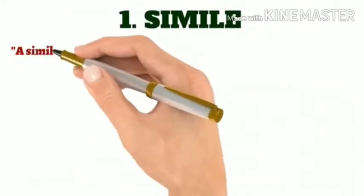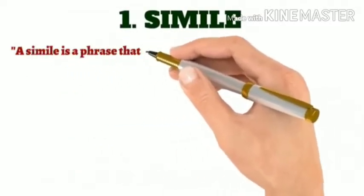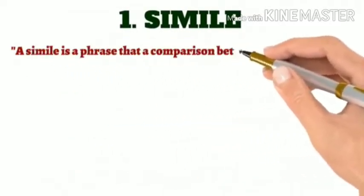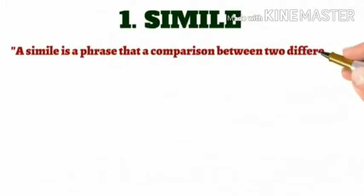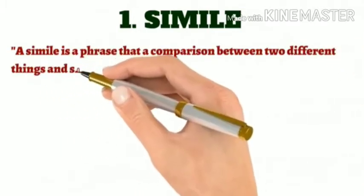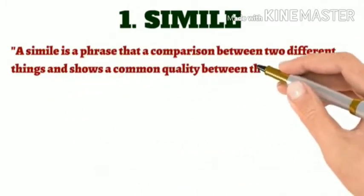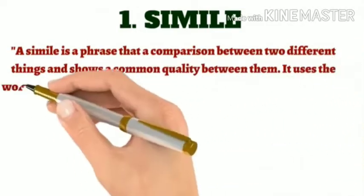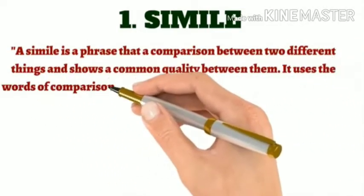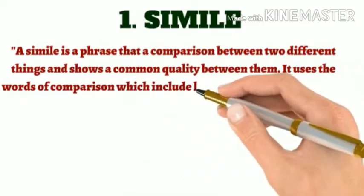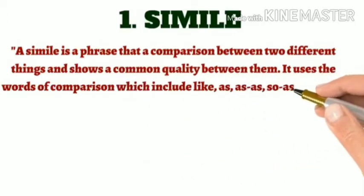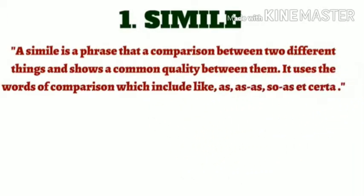Simile. A simile is a phrase that makes a comparison between two different things and shows a common quality between them. It uses words of comparison which include like, as, as-as, so-as, etc.